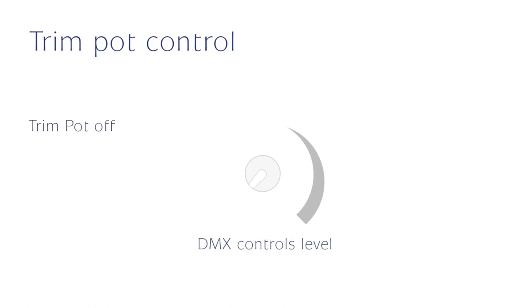If the trim pot is off, DMX controls the level. If there is no DMX present, the trim pot controls the level. But if there is DMX and the trim pot is not turned off, then the trim sets the maximum level and DMX dims proportionately.